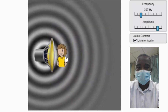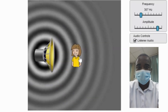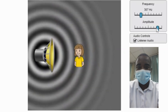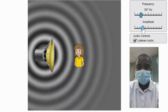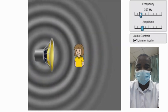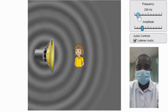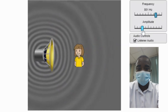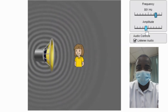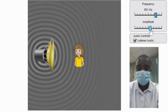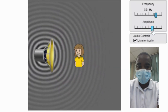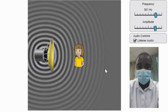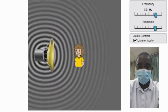Wavelength is the distance between successive crests or troughs of a sound wave. It is inversely proportional to the frequency — as the frequency increases, the wavelength decreases. The simulation helps students visualize the relationship between frequency and wavelength, providing a tangible understanding of these concepts.